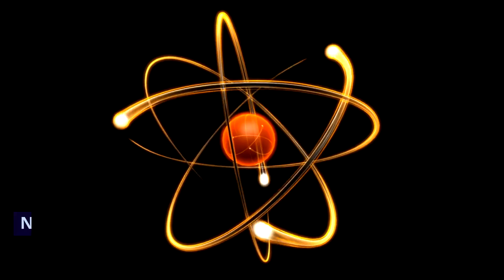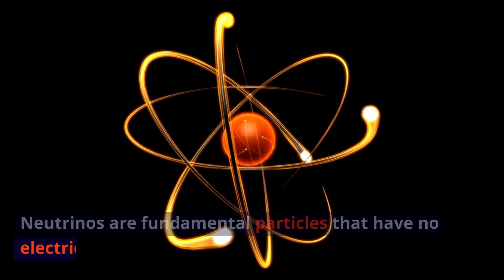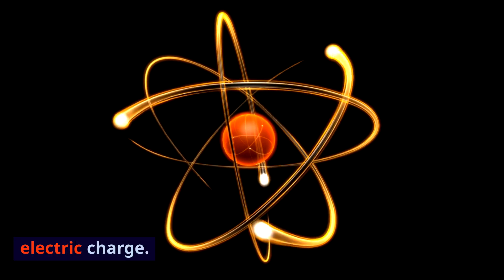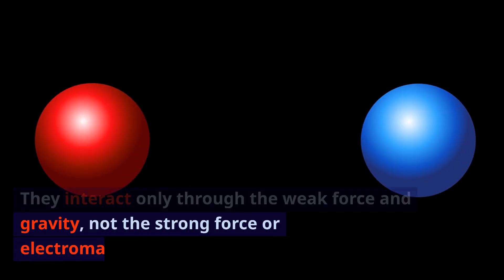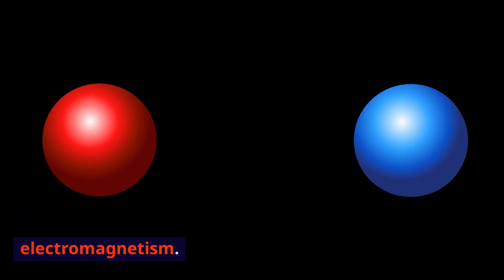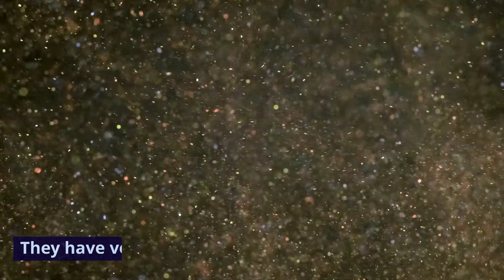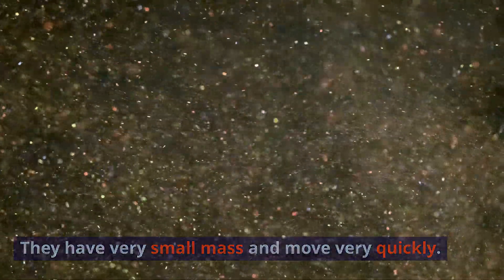Neutrinos are fundamental particles that have no electric charge. They interact only through the weak force and gravity, not the strong force or electromagnetism. They have very small mass and move very quickly.